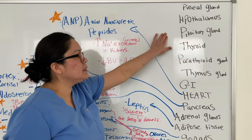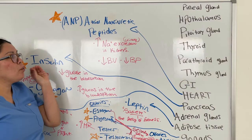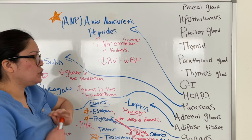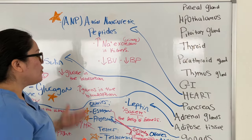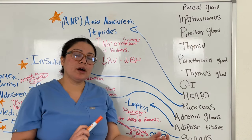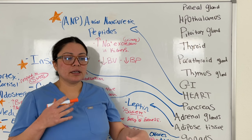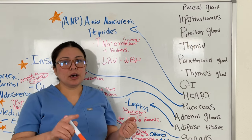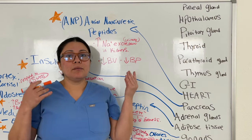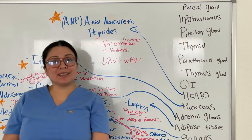That wraps it up — we went over every gland and organ that releases hormones and what those hormones do. This was a quick breakdown of all the hormones; I starred the most important ones you need to know. Check out my other endocrine video linked below for a slower explanation with visuals, and also check out my 20 endocrine practice questions, which are helpful for both the TEAS and HESI exams.